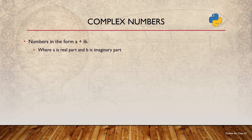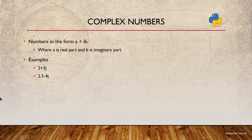Next I am considering complex numbers. Complex numbers are in the form a + ib, where a is the real part and b is the imaginary part, and i equals the square root of negative 1. In Python, the imaginary part is represented using j. For example, 2 + 3j is a complex number where 2 is the real part and 3 is the imaginary part. In another example, 2.5 is the real part and negative 4 is the imaginary part. In a third literal, the real part is 0 and the imaginary part is negative 100.